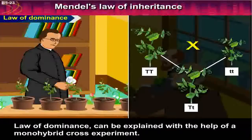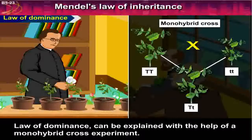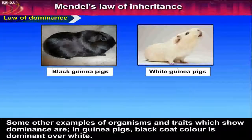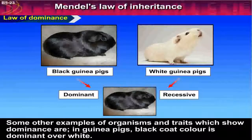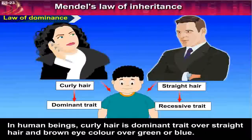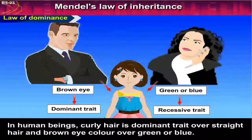The Law of Dominance can be explained with the help of a monohybrid cross experiment. Some other examples of organisms and traits which show dominance are: in guinea pigs, black coat colour is dominant over white. In human beings, curly hair is dominant over straight hair, and brown eye colour is dominant over green or blue.